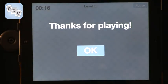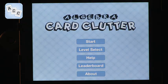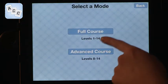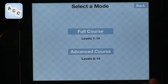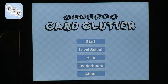And after we've completed that level, because we just selected one, we'll be redirected to the home page. If we click to start and do a full course or the advanced course, you'll just progress until you finish all of the levels. So this one is called Card Clutter.